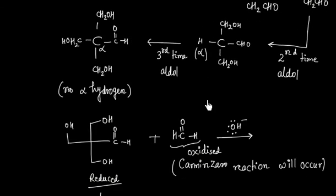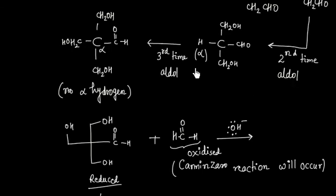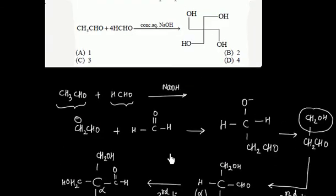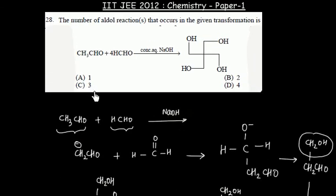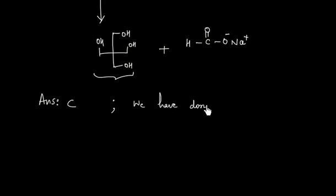So if you look at the final product, the central carbon has four –CH₂OH groups. We performed three aldol reactions and one Cannizzaro reaction. The question asks how many times the aldol reaction occurred, so the answer is three times. The answer is option C.